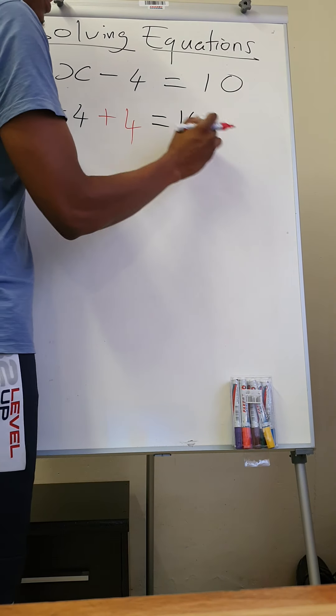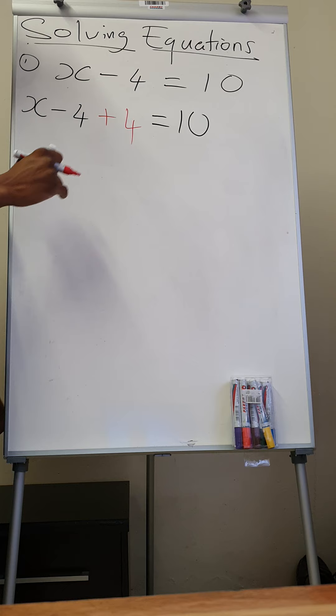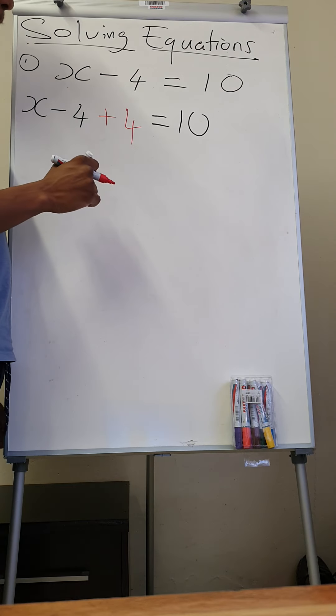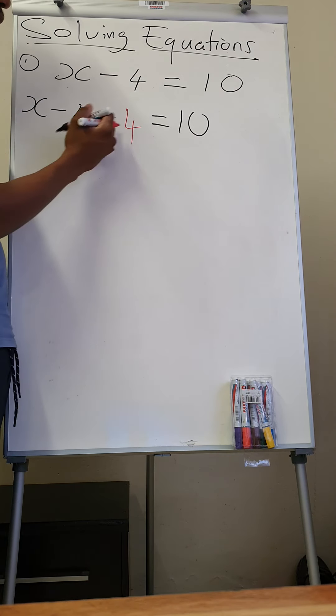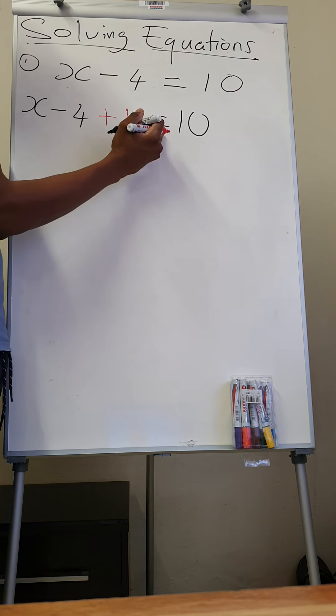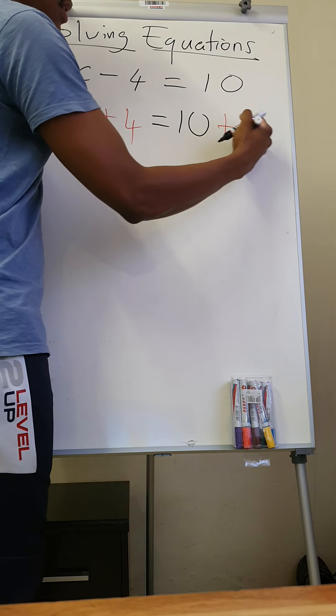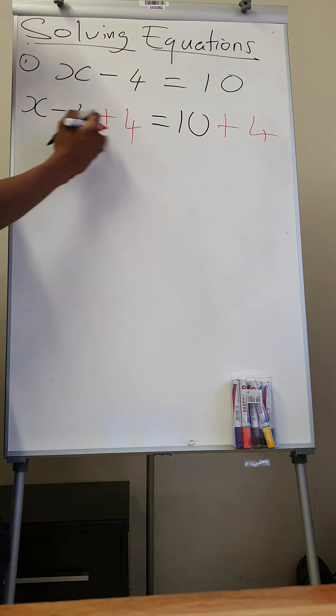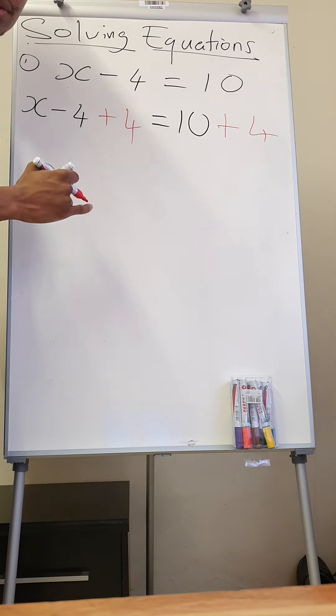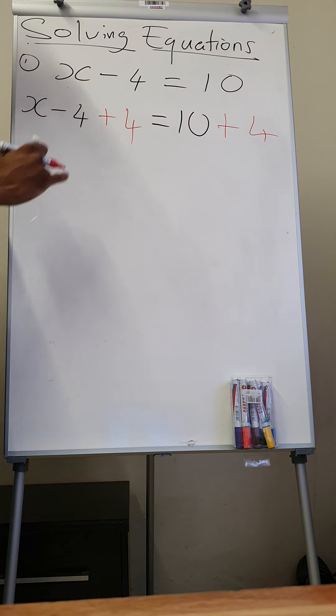This side, you still have plus 10. So now, what you do on the left of the equal sign, you must also do on the right of the equal sign. On my left, we added 4, so on my right, we must also add 4.